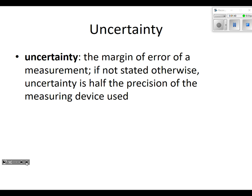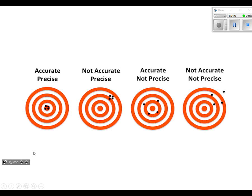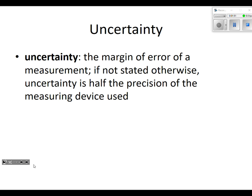The uncertainty is the margin of error. If not stated otherwise, uncertainty is half the precision of the measuring device used. Half the precision is the key term there.